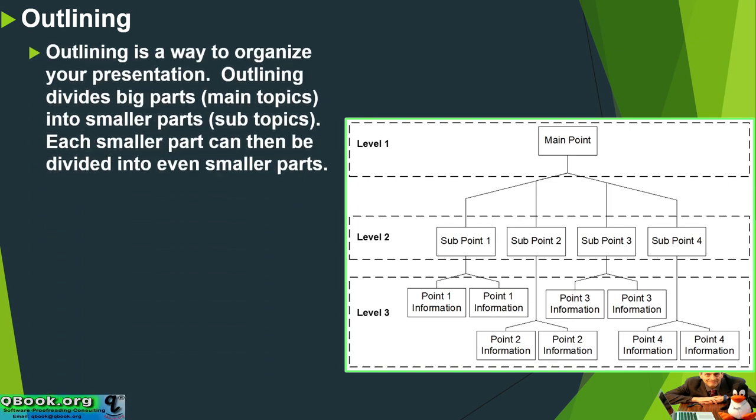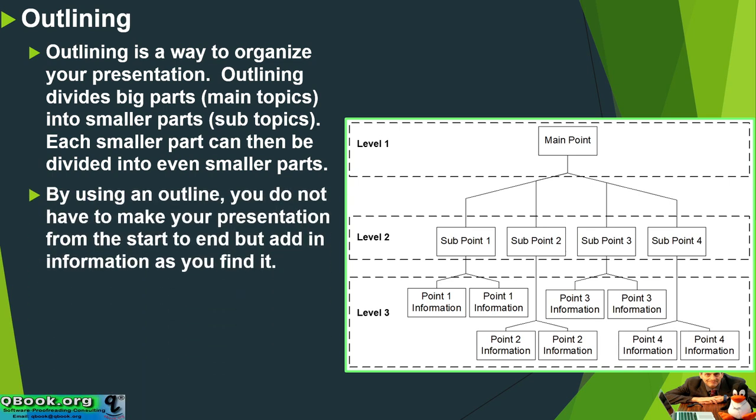Outlining is a way to organize your presentation. Outlining divides big parts, like your main topics, into smaller parts, like subtopics. Each smaller part can then be divided into even smaller parts. By using an outline, you do not have to make your presentation from the start to the end, but you can add the information as you find it.